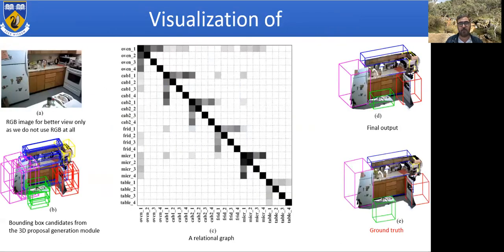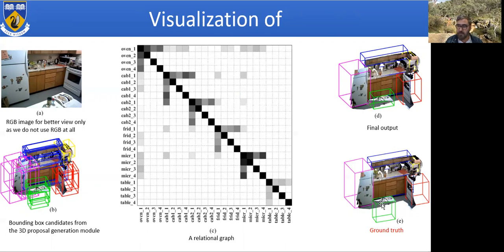Here is a sample visualization. We show an input RGB image just to illustrate how the scene looks — we don't use the RGB values of points. These are the bounding box proposals, one of the three relation graphs showing relationships between objects like oven and cabinet or oven and fridge, and finally our output detections and the ground truth. For the table, our algorithm more accurately isolates the scanned points as the detected box, whereas the ground truth box appears to have been drawn using the RGB image and covers unscanned regions.